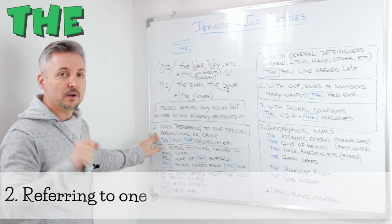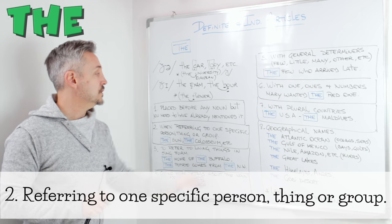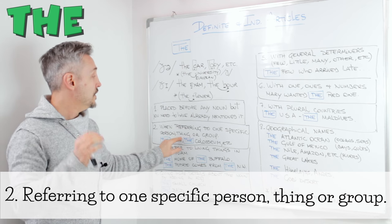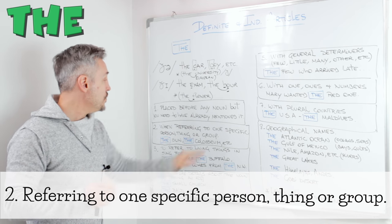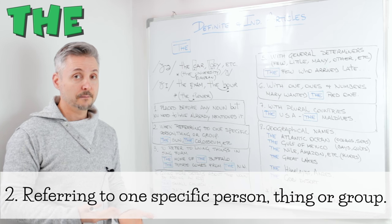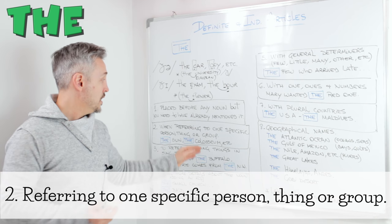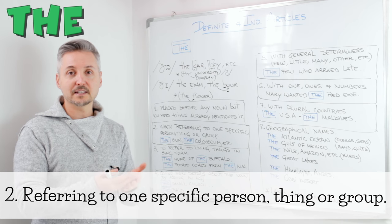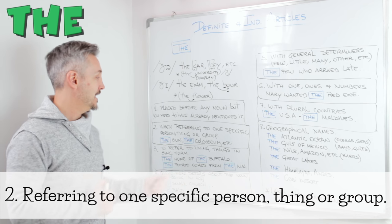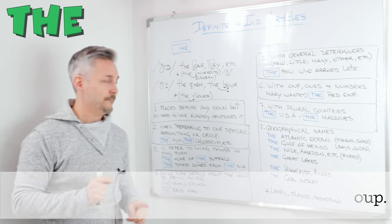Rule number two: when referring to one specific person, thing, or group. For example, 'the sun', 'the earth', 'the Colosseum', etc. So 'specific' means there is only one.